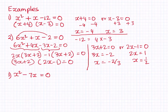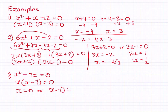For example 5: x squared minus 7x equals 0. We can see a common factor of x, so factorizing gives x(x − 7) = 0. This gives two equations: x equals 0, or x minus 7 equals 0. Adding 7 to both sides of the second equation gives x equals 7. So the answers are x equals 0 and x equals 7.